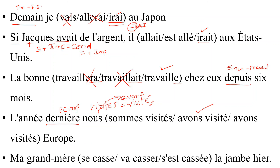Last one: 'Marc — la jambe hier.' 'Hier' means 'yesterday' — more than 24 hours ago — passé composé. 'Se casse' is present tense, wrong. 'Va se casser' is futur proche, wrong. 'S'est cassé' is correct: passé composé of a reflexive verb, so it uses être, and the participle agrees with the subject. That is the answer.